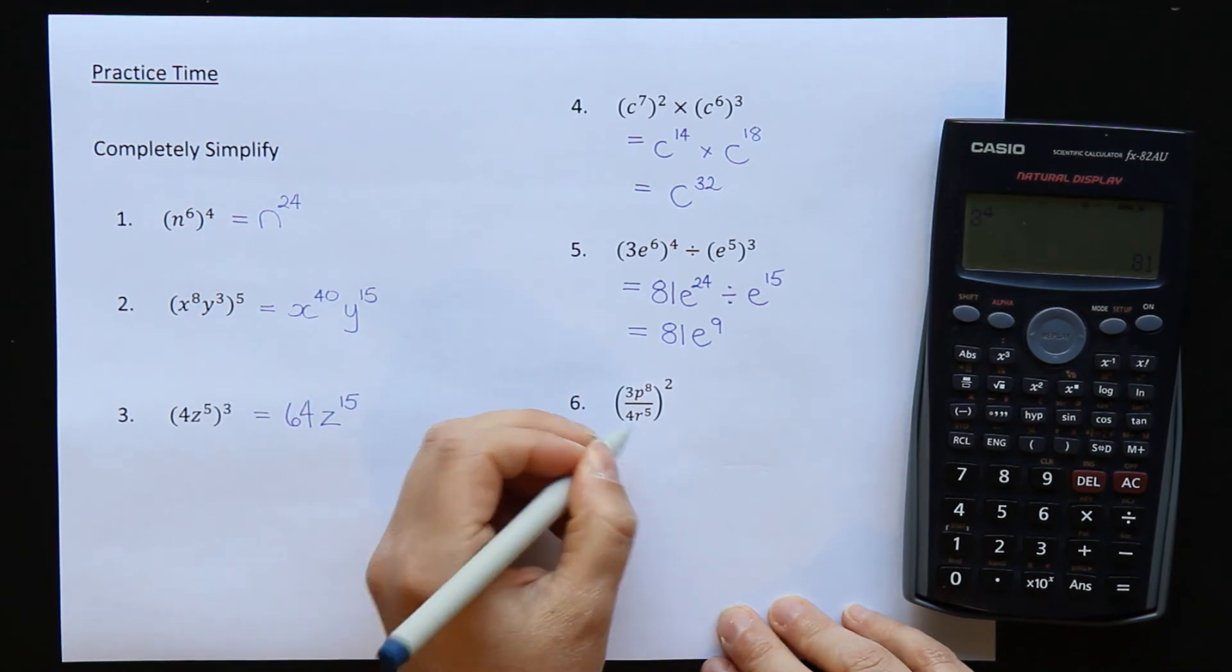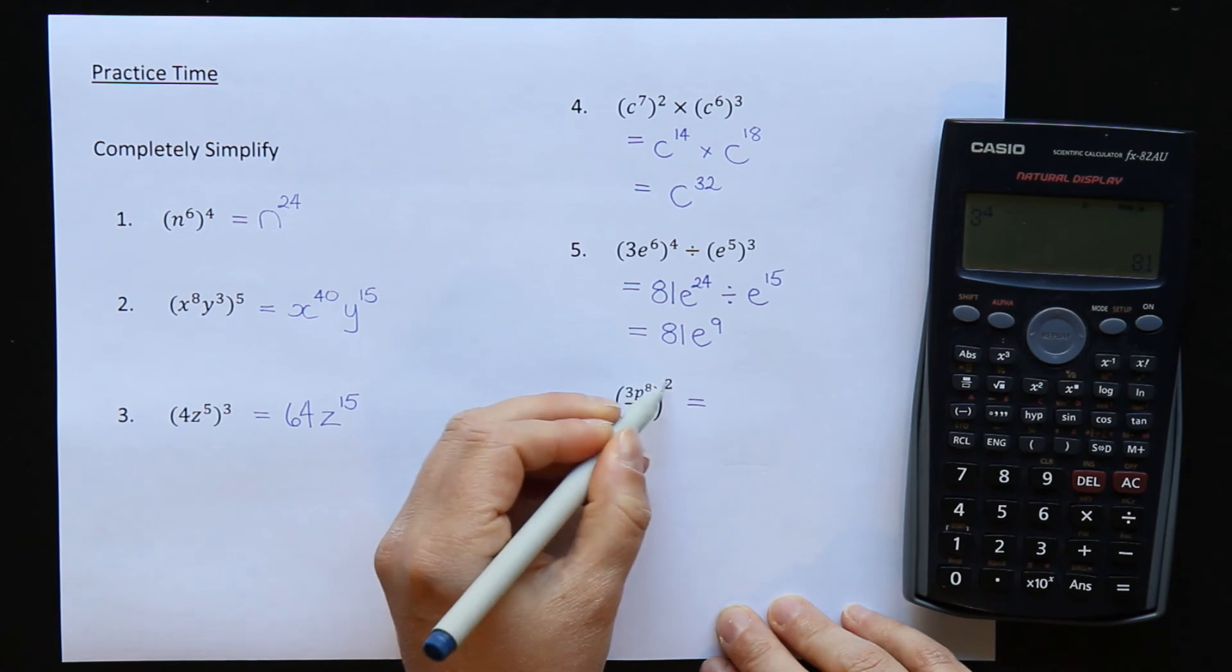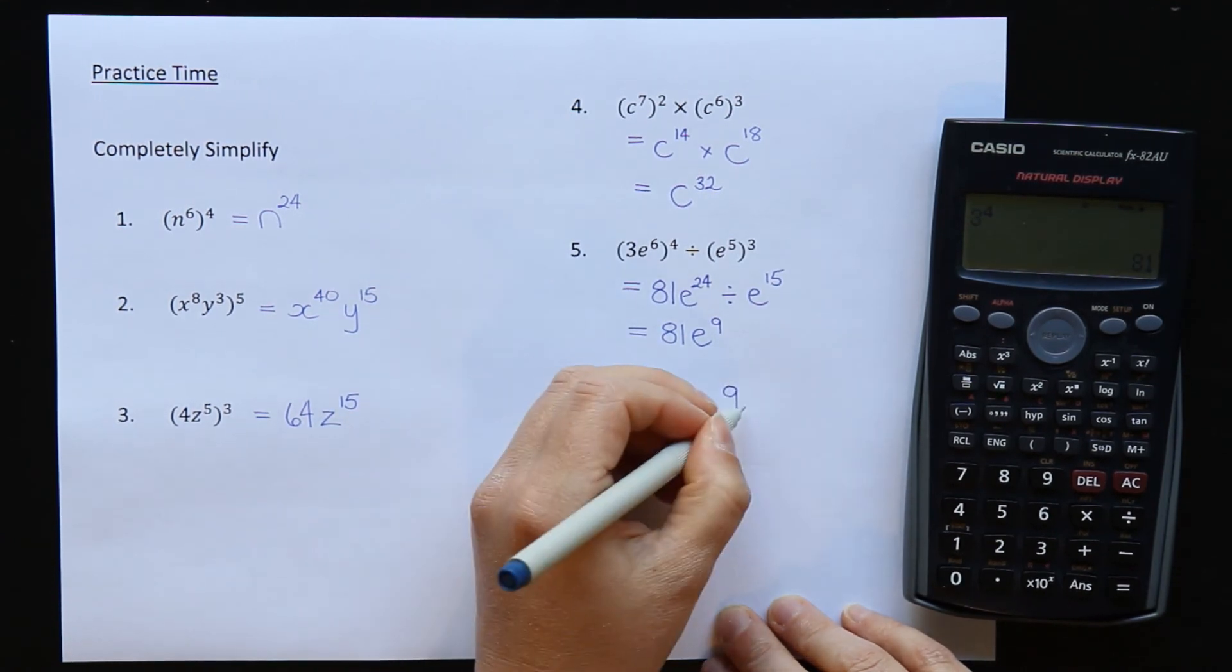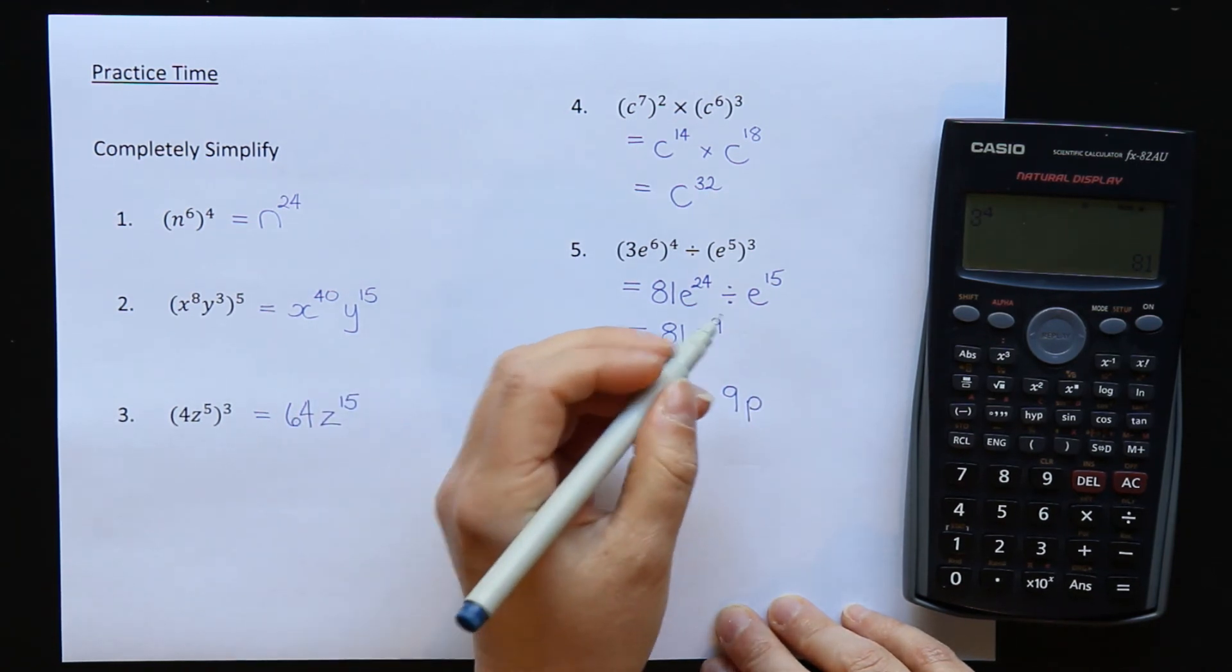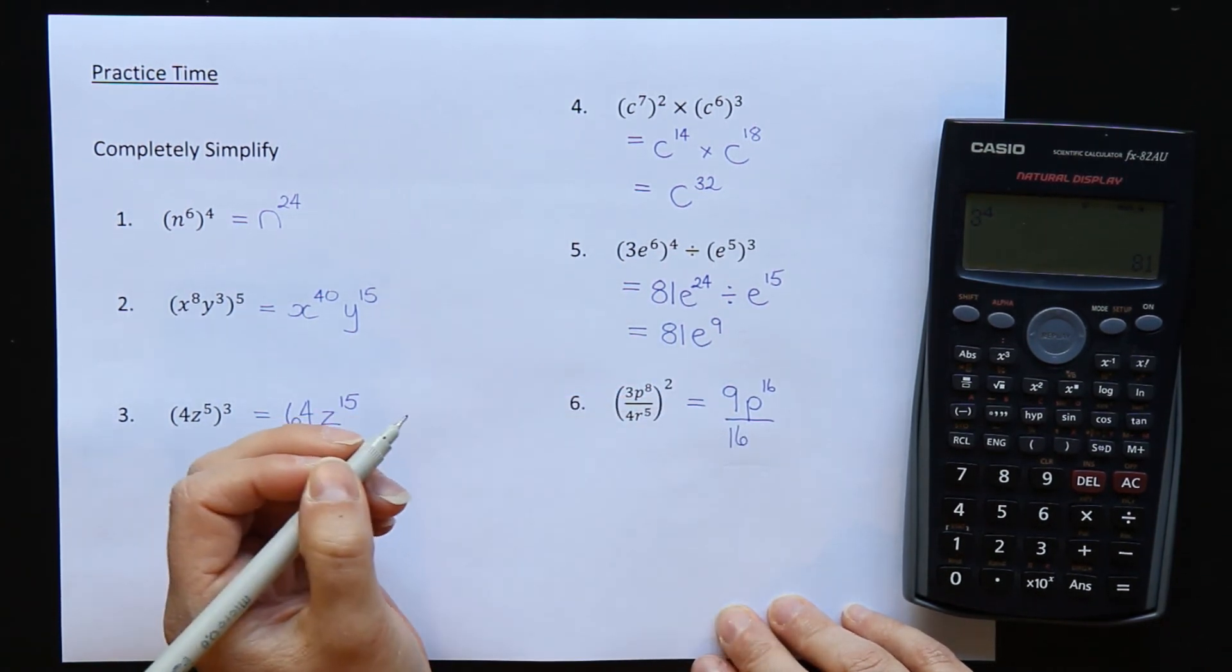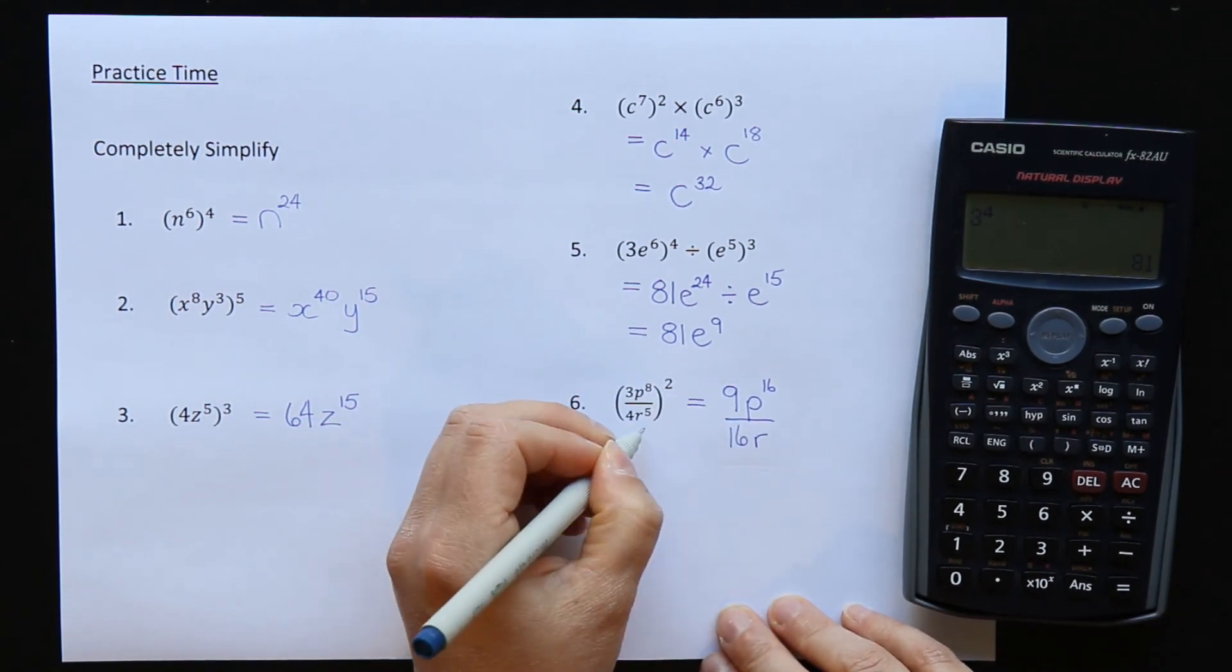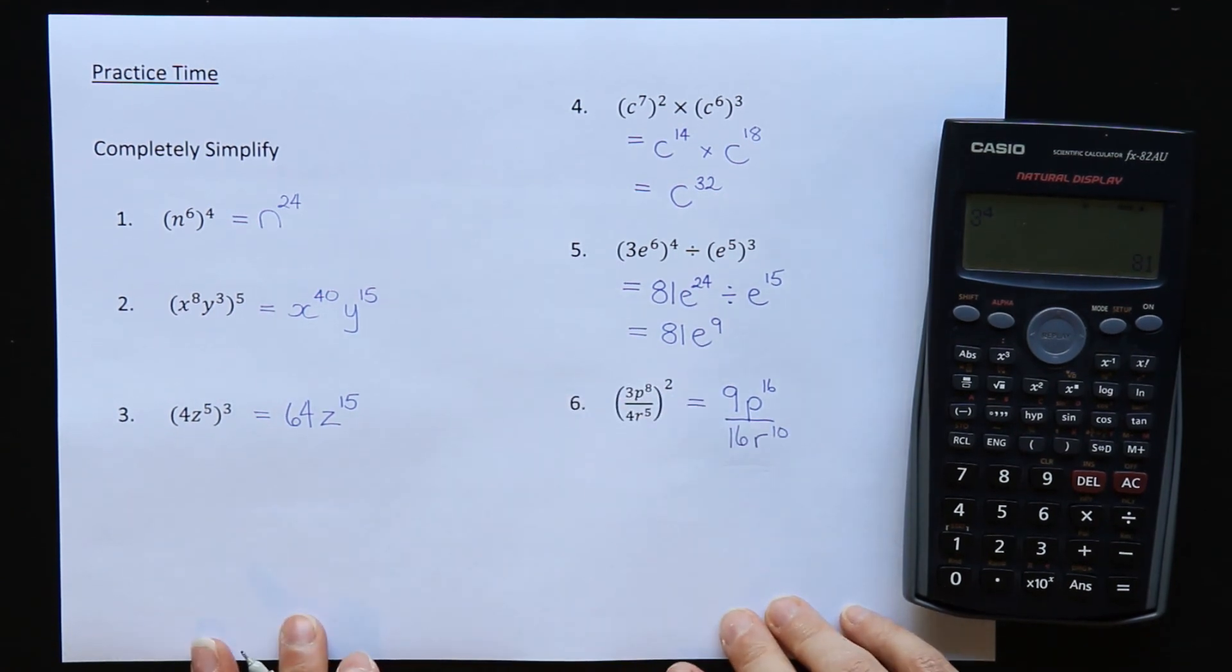And lucky last. On the top we need to do 3 to the power of 2 which is 9. Our base is P and we have to multiply the power. 8 times 2 is 16. On the bottom, 4 to the power of 2. 4 times 4 is 16. R is the base and 5 times 2 is 10. Check for simplification but we can't do anything so that's your answer.